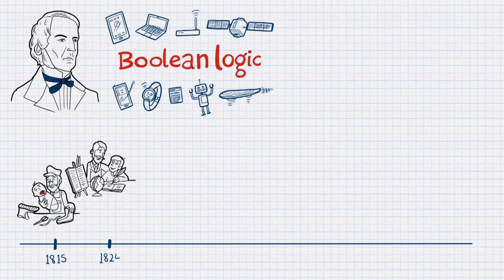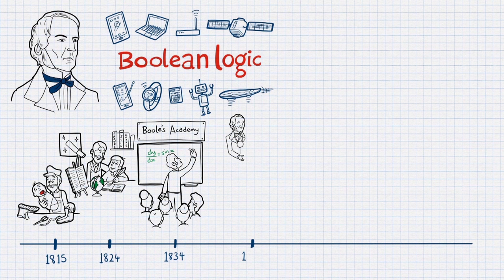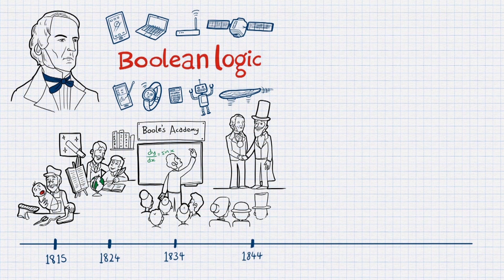George became a teacher at 16 and set up his own school at age 19. He was a self-taught mathematician, and although he never got the opportunity to go to university, he was awarded the gold medal by the Royal Society in London for his outstanding research in mathematics.